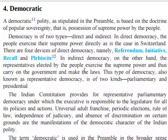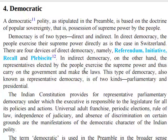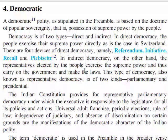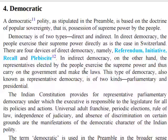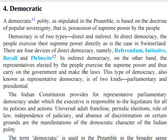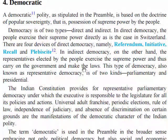Next we discuss 'democratic.' A democratic polity, as stipulated in the Preamble, is based on the doctrine of popular sovereignty, that is, the possession of supreme power by the people. Democracy is of two types: direct and indirect. In direct democracy, the people exercise their supreme power directly, as is the case in Switzerland. There are four devices of direct democracy: referendum, recall, initiative, and public initiative.